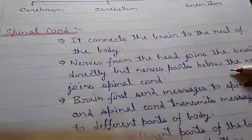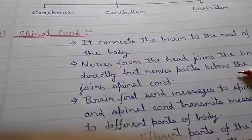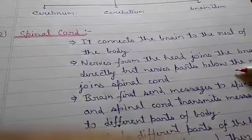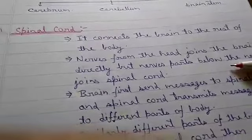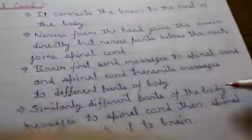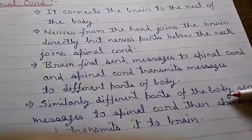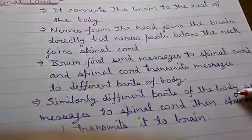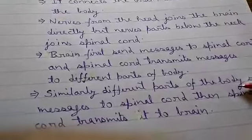When different body organs send messages, they send the message to the spinal cord, and then the spinal cord transmits this message to the brain. Similarly, the brain sends messages to the spinal cord, and the spinal cord transmits those messages to the different parts of the body. In this diagram you can see the spinal cord.